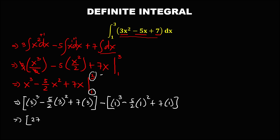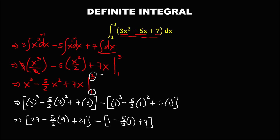3³ is 27, then minus (5/2) times 3² which is 9, then plus 7 times 3 which is 21, then minus: 1³ is 1, then minus 5/2, and 1² is 1, then plus 7.